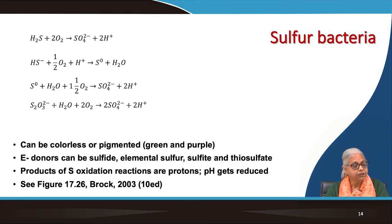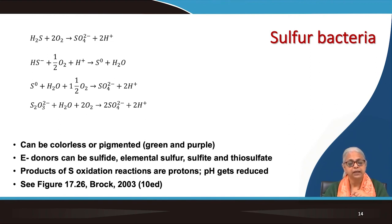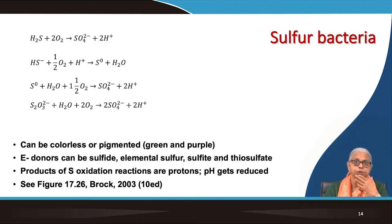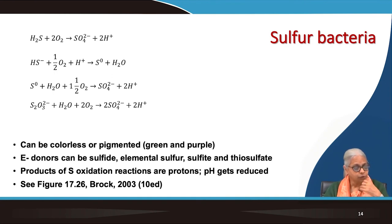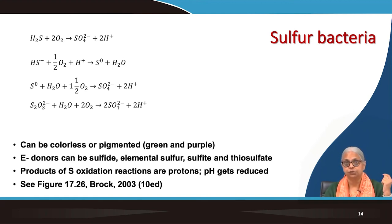Then we come to sulfur bacteria. We have different reduced forms of sulfur: hydrogen sulfide, elemental sulfur, and thiosulfate — in combination with oxygen, these can be converted to more oxidized forms of sulfur. Sulfur bacteria are fairly common all around us. They can be both colorless or pigmented — green or purple — and the electron donors can be sulfide. Products of the sulfur oxidation reactions are protons, and the pH gets reduced.